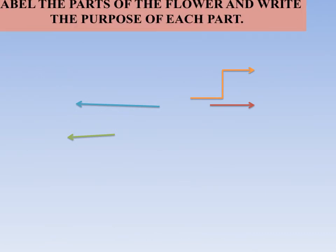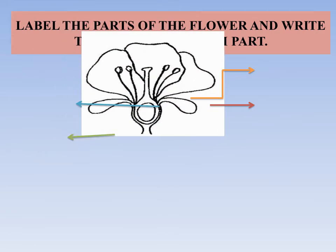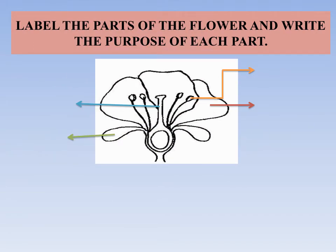Label the parts of the flower and write the purpose of each plant part. You have a picture on page number 33 to label. The green arrows show the sepal, the blue arrows show the style, the red arrows show the petals, and the orange arrows show the anther.